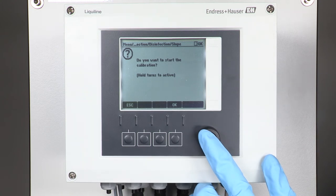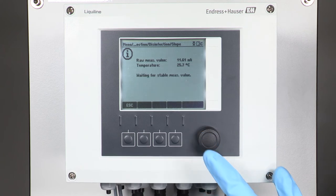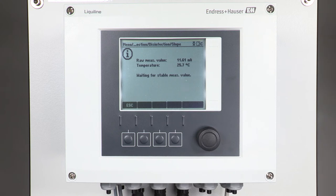Start the calibration and press OK. The transmitter checks if the stability criteria are fulfilled and stores the present value for a later adjustment. We continue with the next step in the calibration menu.